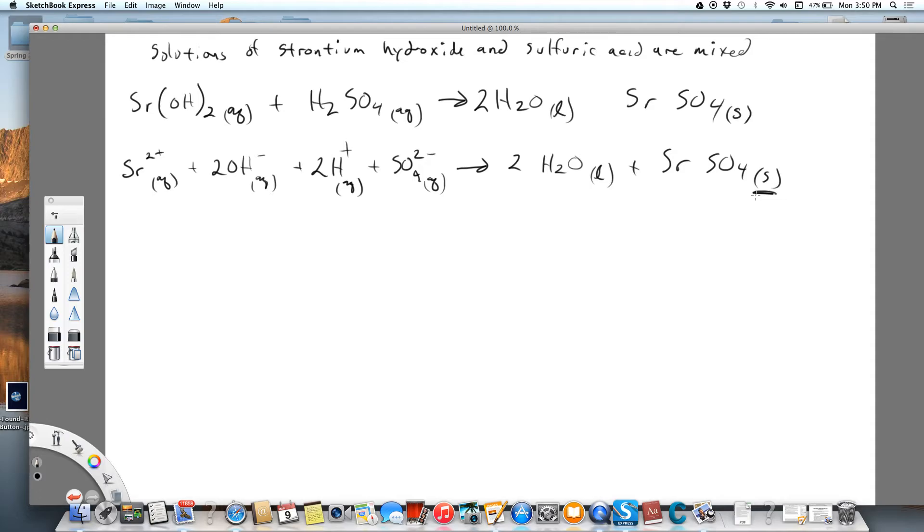So for the net ionic equation, nothing is going to get crossed off. Everything undergoes change. We've got water from the acid and the base, and we've got a precipitate from the strontium and the sulfate that reacted. So the net ionic equation is going to be the same as the total, so we don't need to even write it.